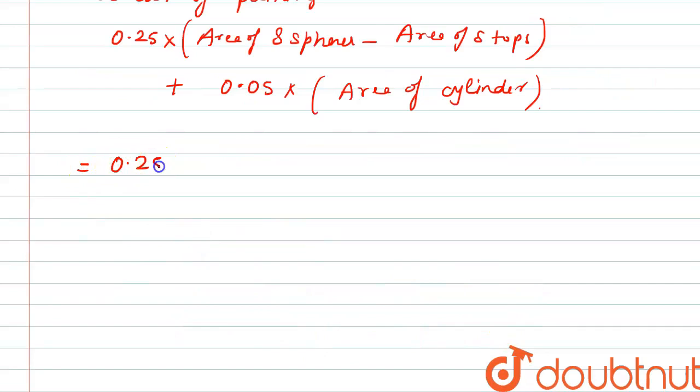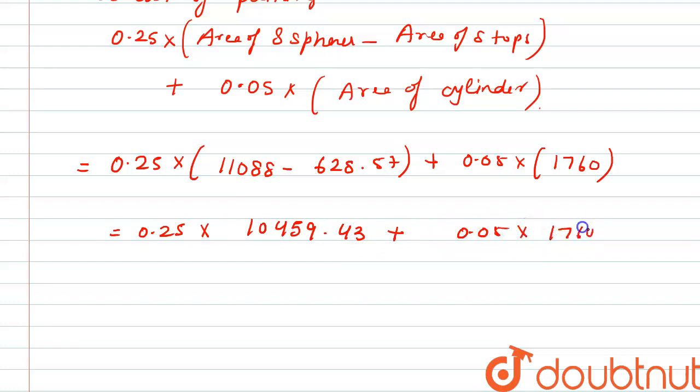This is equal to 0.25 multiplied by 11088 minus 628.57 plus 0.05 multiplied by 1760. So the value comes out to be 0.25 × 10459.43 plus 0.05 × 1760, which equals 2614.85 plus 88. So the total value comes out to be 2,702.85 rupees.